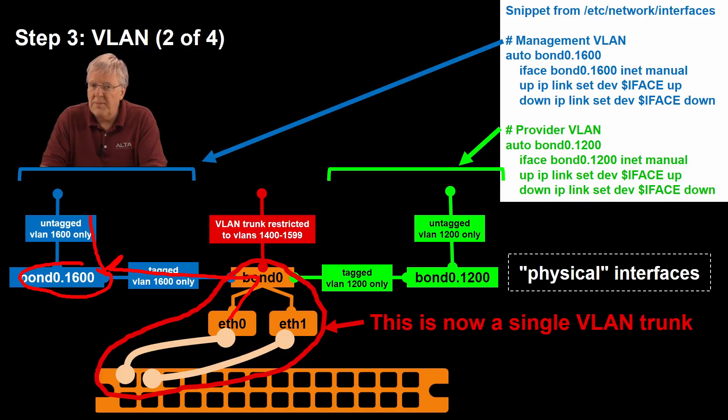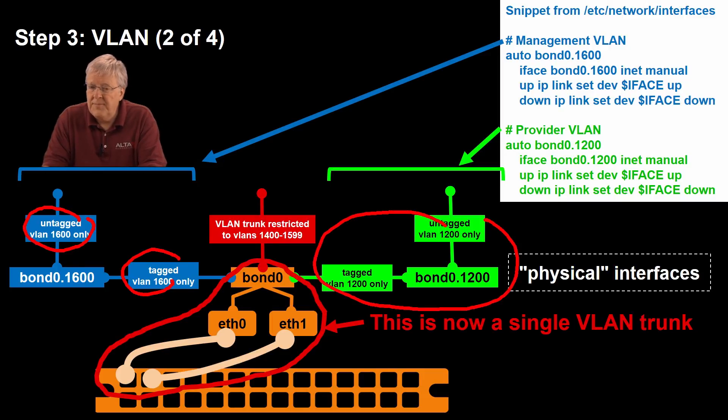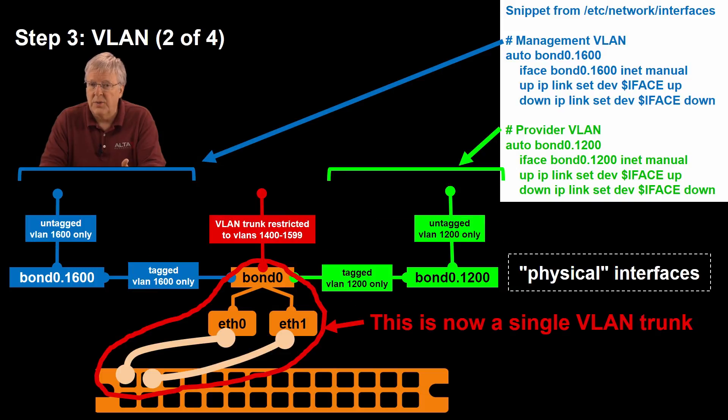And when traffic passes through the bond 0.1600 interface, the traffic is untagged. So, it's untagged or like access on this side. And this side would appear like a trunk, but only for VLAN 1600. Do the same thing in this particular case for VLAN 1200 or whatever the VLAN would be, for instance, for your provider network. I'm going to directly connect to bond 0 with other services. That will be a trunk. VLAN tags will persist in that case.